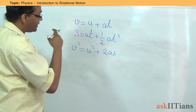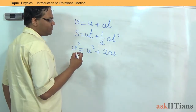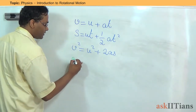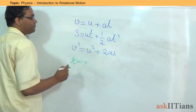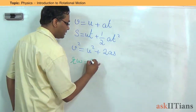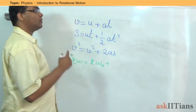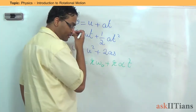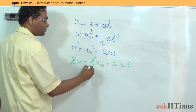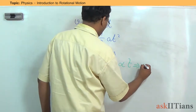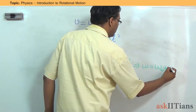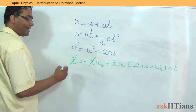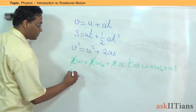We can say that the initial velocity u is r·ω₀, and the final velocity v is r·ω. So if I substitute, I get r·ω for v; for initial velocity u I can say r·ω₀; for the acceleration a I can say r·α, into time t. If I get rid of the factors of r, I get omega equals omega-naught plus alpha·t. So this is the first angular equation of motion.